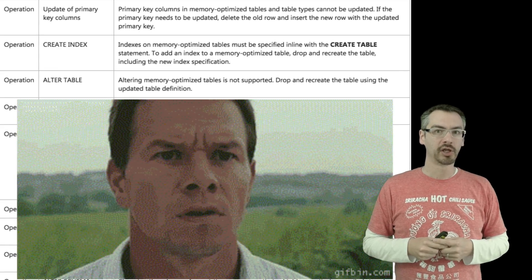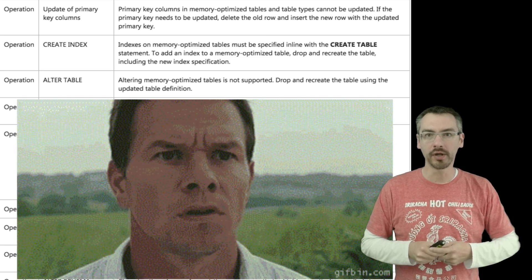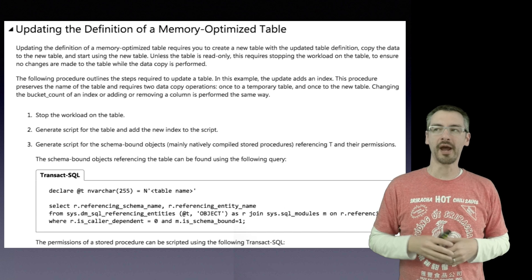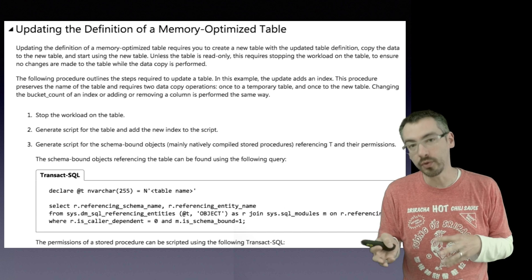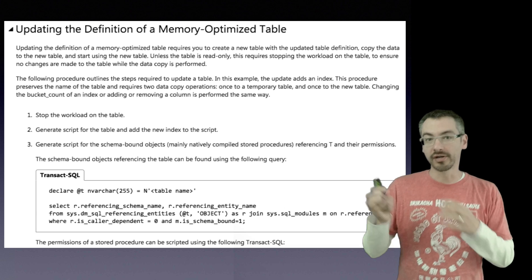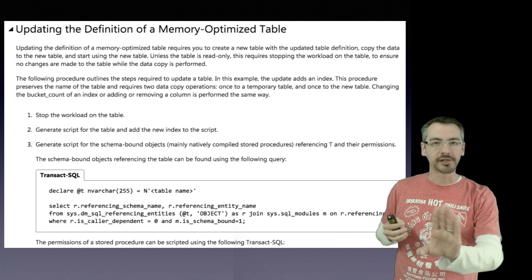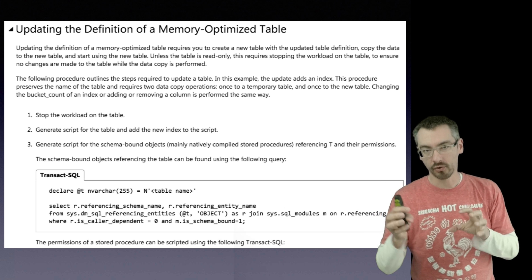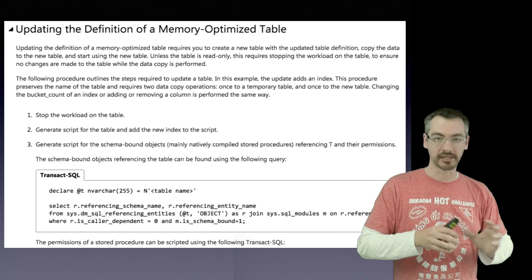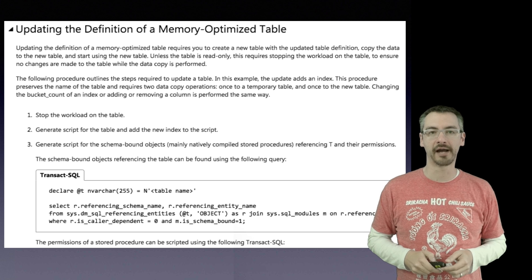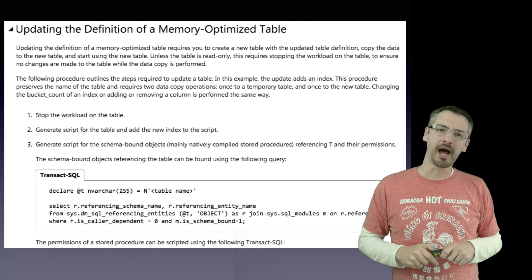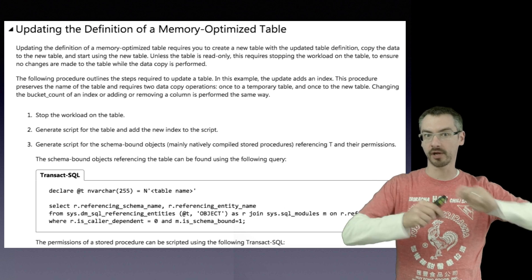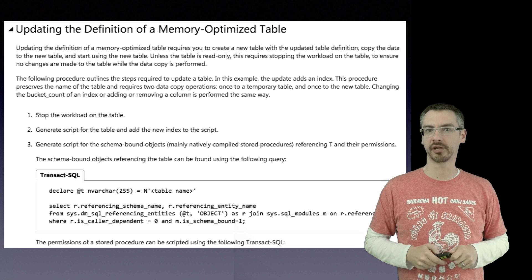Some of that starts to get a little tricky. What do you mean I can't alter the table — you mean I can never change this table once it goes live? Technically you can. What you have to do is go create a new table and then move all your data into it, which of course means you're going to have to stop all access, shut down your application, create the new table, move the data across, rename the tables, and then let your application go live.